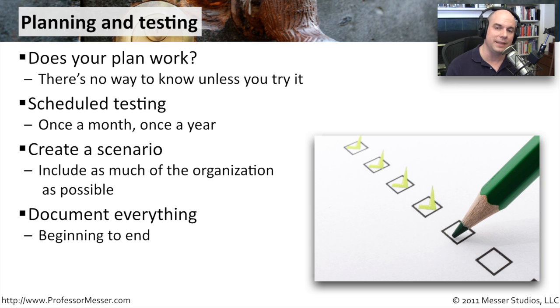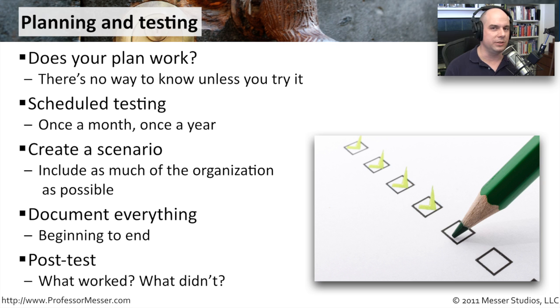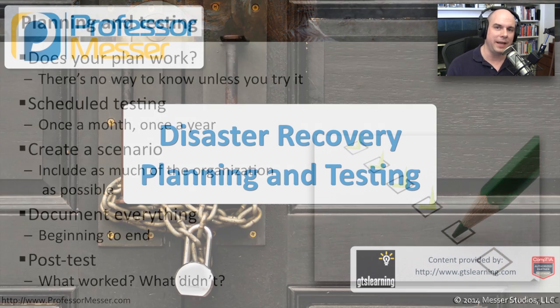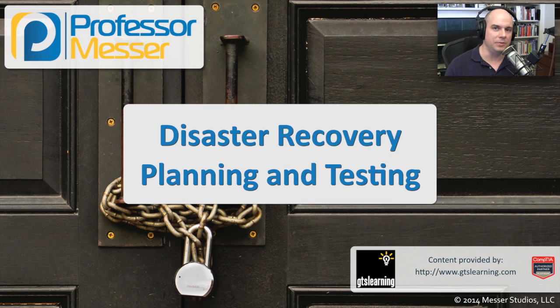Afterwards, you'll be able to look at that list and say: what worked during our test, and what did not work? Do we need to change our processes? Do we need to buy additional resources? Or do we need to think differently about how we're going to handle this problem should it occur?